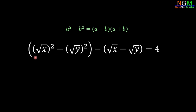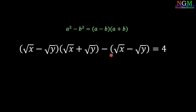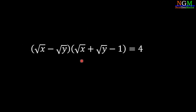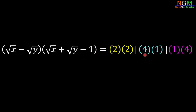Applying the identity here: root x minus root y times root x plus root y, minus root x minus root y equals 4. Here, root x minus root y is a common factor, so we factor it out to get: root x minus root y times (root x plus root y minus 1) equals 4. We now consider the factor pairs of 4: 2×2, 4×1, or 1×4.